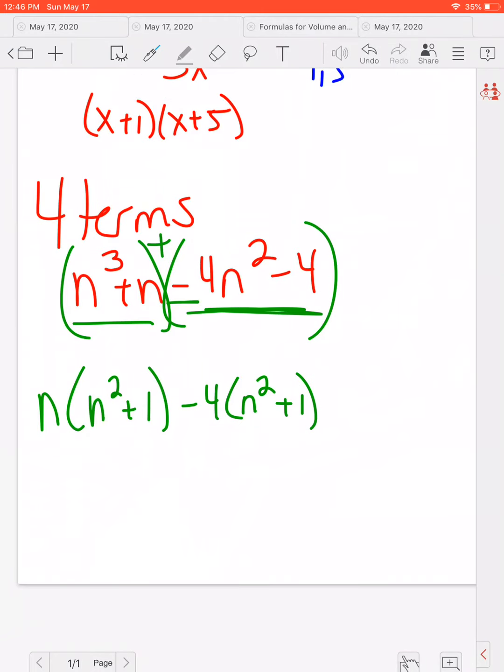Now, when we do factor by grouping, our whole goal is to get these two parentheses to look exactly the same, because then I can use that as my greatest common factor. And when I factor that out, I'm left with the N minus 4.